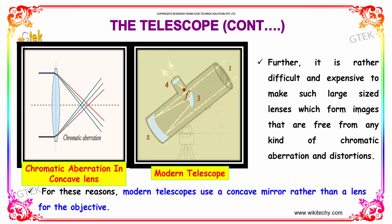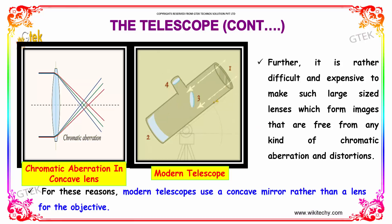For these reasons, modern telescopes use a concave mirror rather than a lens for the objective.